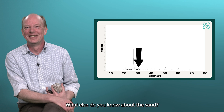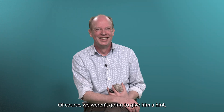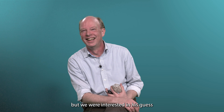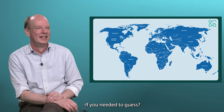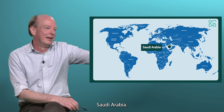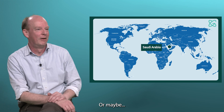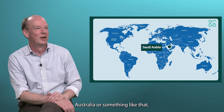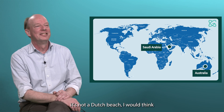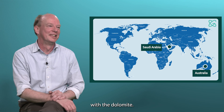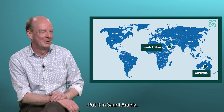What else do you know about this sand? Do you have any hints? Of course we weren't going to give him a hint, but we were interested in his guess as to which holiday destination this sand came from. If you needed to guess? Saudi Arabia. Or maybe Australia or something like that. It's not a Dutch beach, I would think, with the dolomite. Saudi Arabia or Australia? Put it in Saudi Arabia.